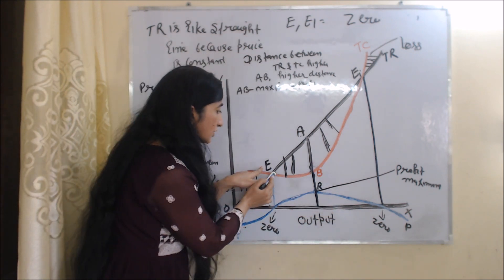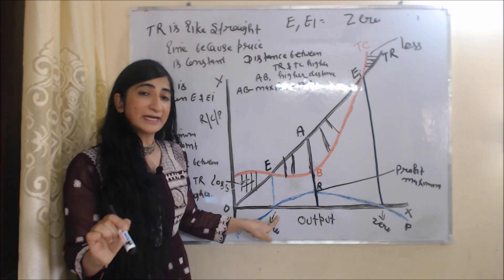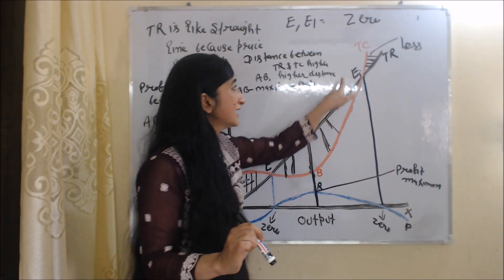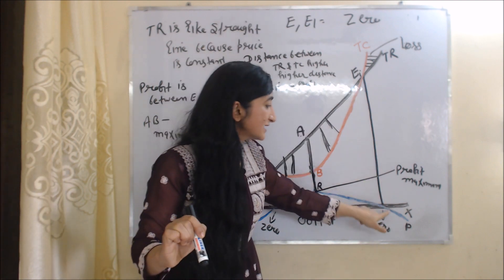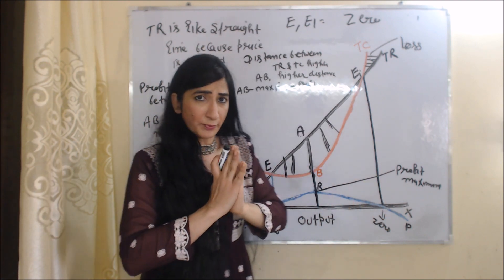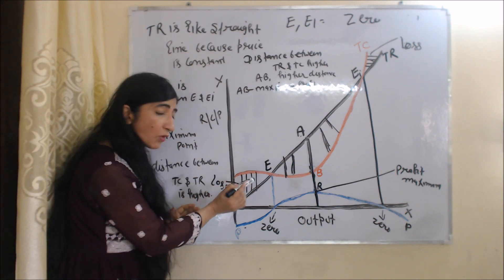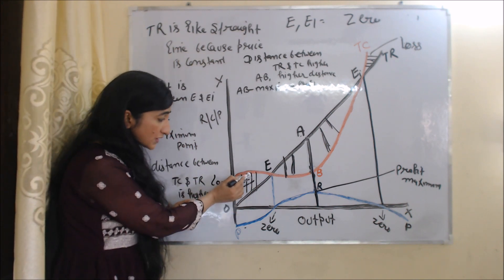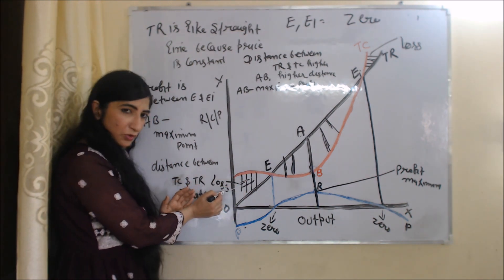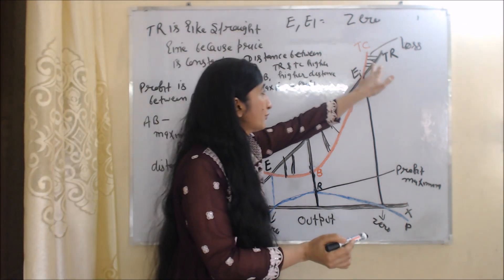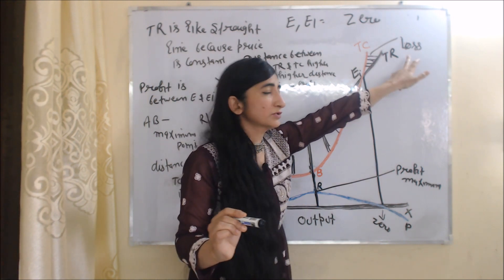At point E, total cost is equal to total revenue, so the firm is getting zero profit. Again, at point E1, total cost is equal to total revenue, so the firm is also getting zero profit here. Before point E, total cost is more than total revenue — the total cost curve is above the total revenue curve — so this part shows losses. After point E1, total cost is again more than total revenue, so this part also shows losses.